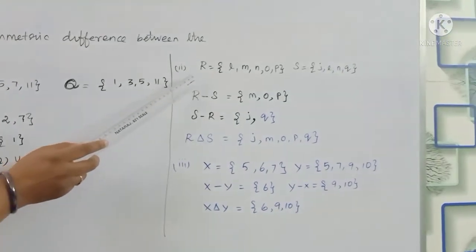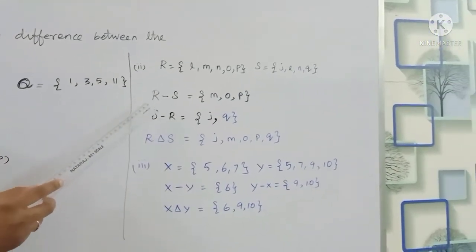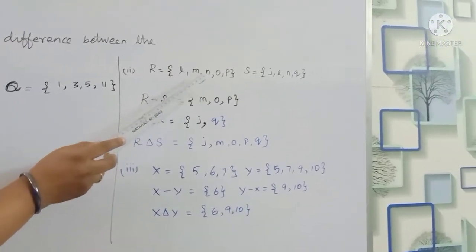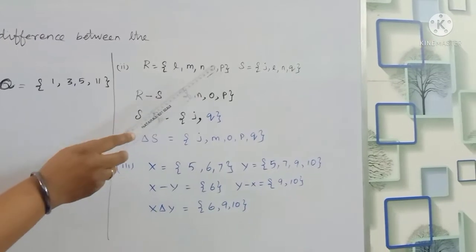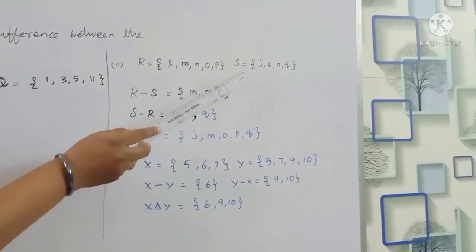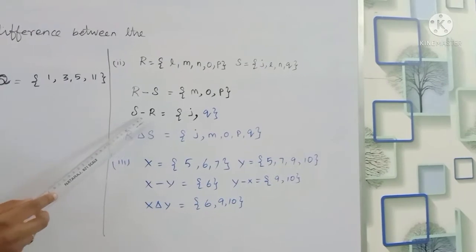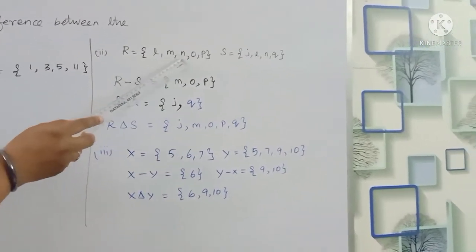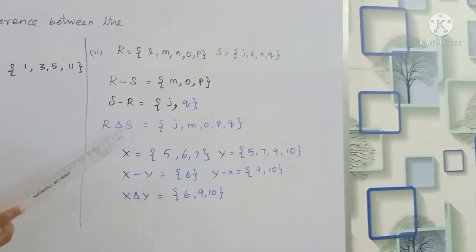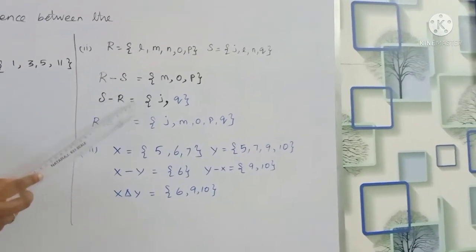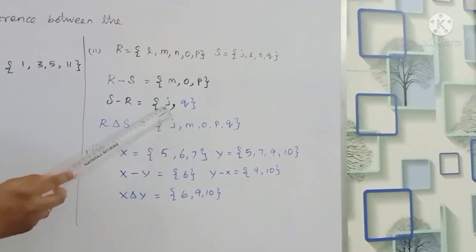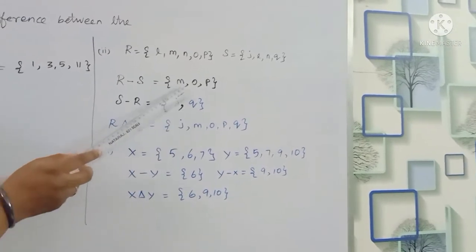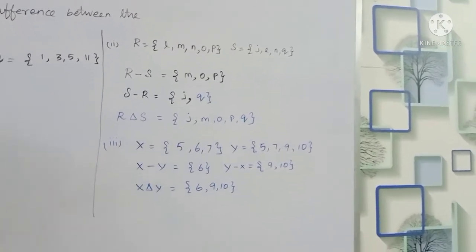Next, the second subdivision: R symmetric difference S. R minus S and S minus R are found the same way. The result is {J, M, O, P, Q}. This is the book answer — note that order doesn't matter in sets.